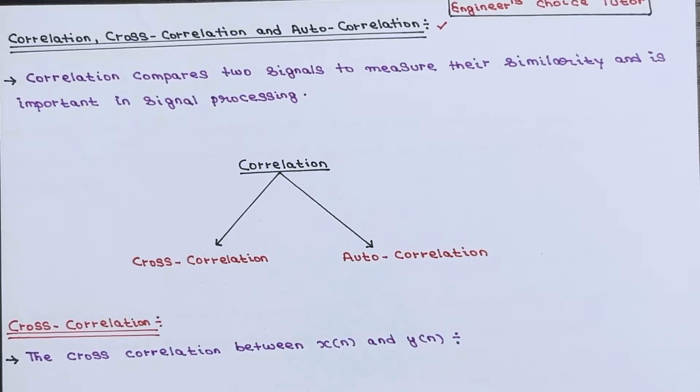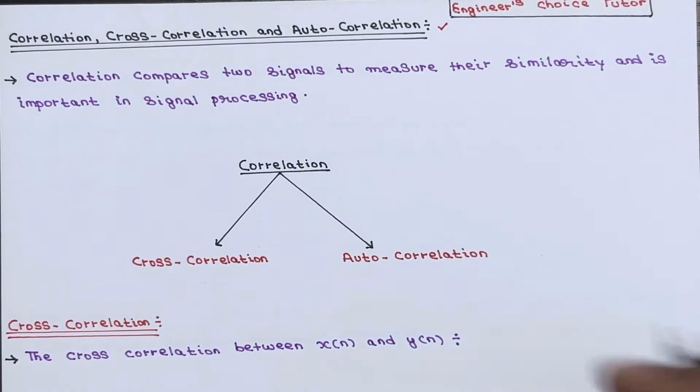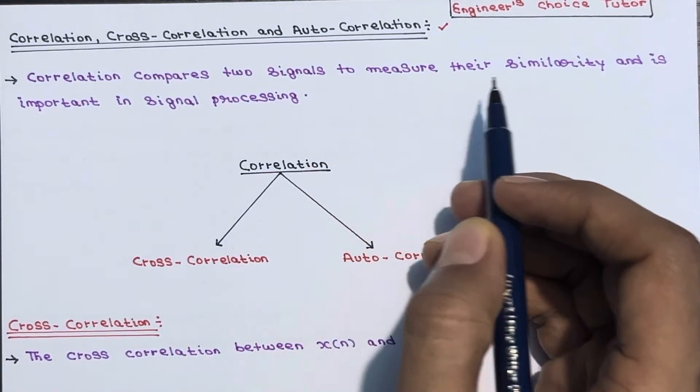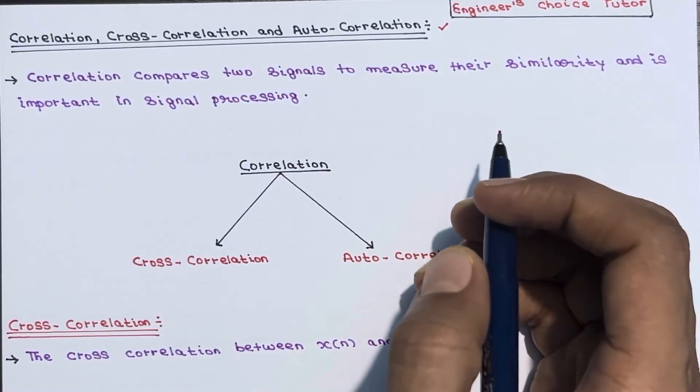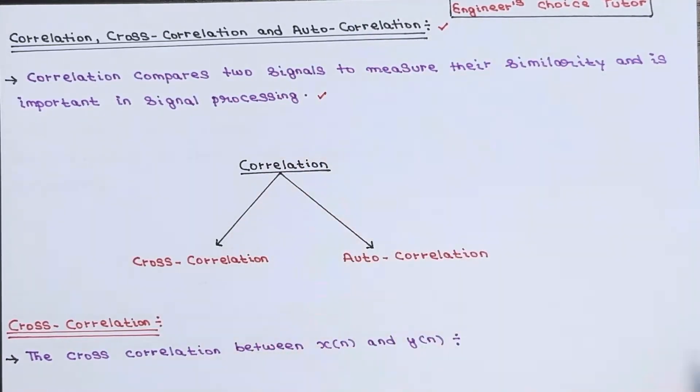So correlation compares two signals to measure their similarity and is important in signal processing. It is used in radar and sonar systems to locate targets and has applications in image processing and control engineering.